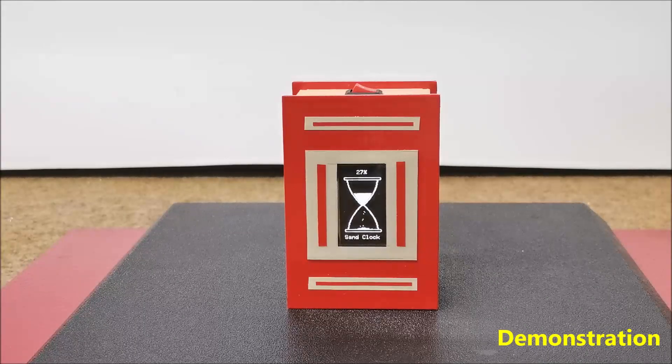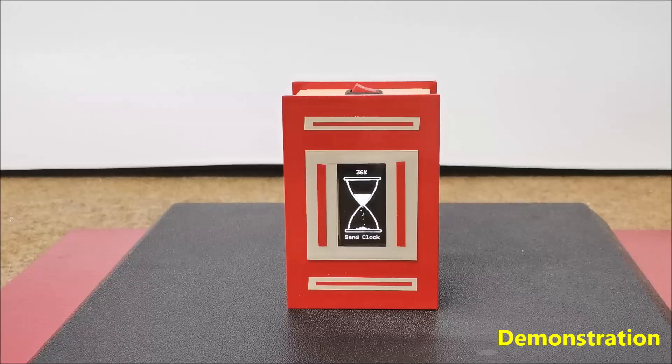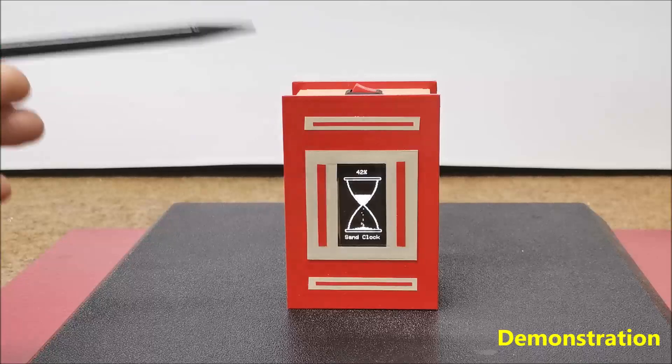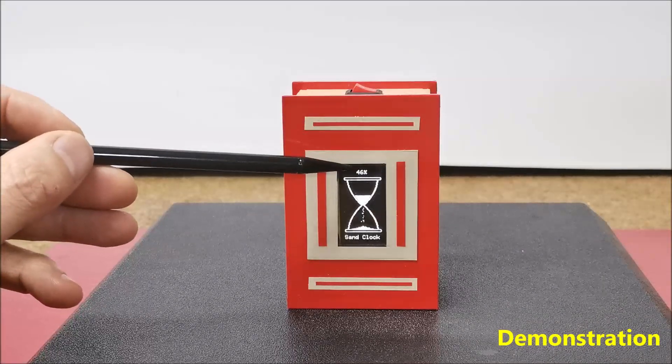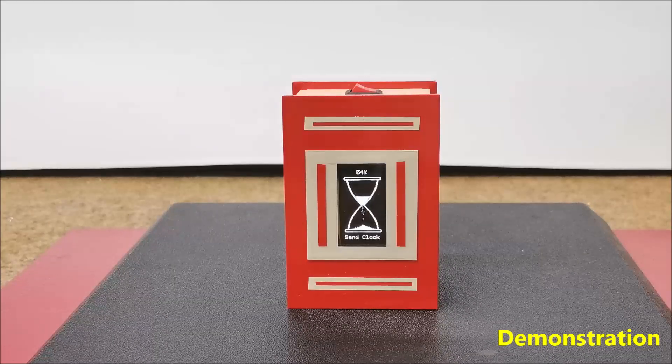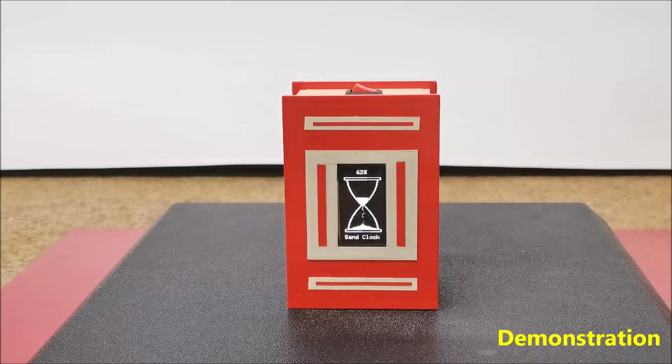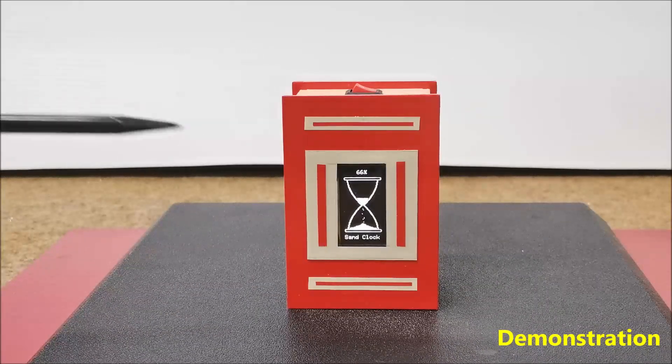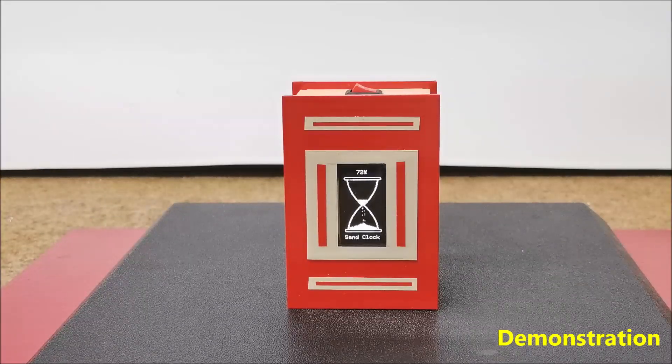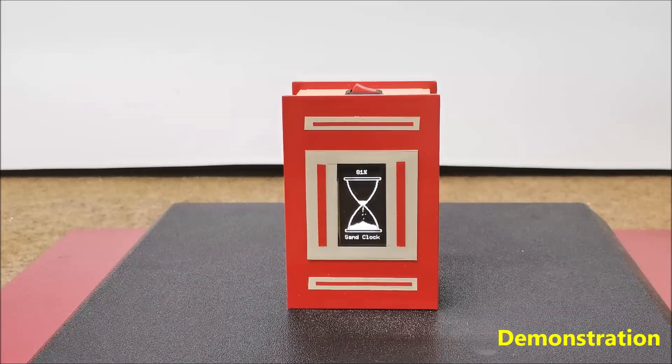The time for which all the sand flows from the upper to the lower container is set in the code and in this case is set to exactly one minute. In the upper part above the hourglass the percentage of time elapsed from the beginning of the flow to the moment of reading is displayed. In this case a certain animation can be observed in the upper and lower background as well as the grains of sand flow in order for the hourglass to be as realistic as possible.